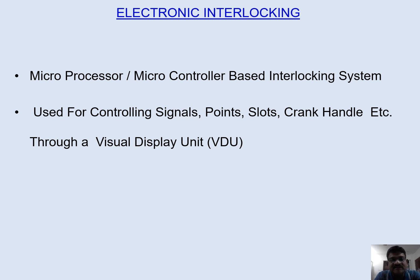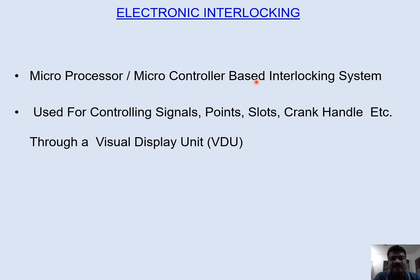Let us see what is actually an electronic interlocking system. It is basically a microprocessor or microcontroller based electronic interlocking system, which is nothing but a CPU or a computer. The required software is already fed into the computer and it does all the processing. It is a centralized point from where it is used to control signals, points, slots, crank handles, or all the equipment available in the signaling system — through a visual display unit, that is through a VDU.